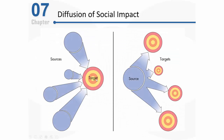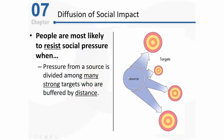Just as many strong, close sources will maximize the social pressure exerted on a target, it's also true that many strong, distant targets will diffuse or weaken the social pressure from any given source. For example, imagine a dad who lives in Ohio — he may lose quite a bit of his social influencing power when his strong-willed kids move out of state. Unlike when his children all lived at home and depended on him, he now has much less social impact on their daily lives. People are most likely to resist social pressure when pressure from that source is divided among many strong targets who are buffered by some type of psychological distance.